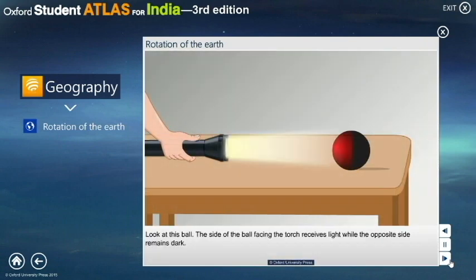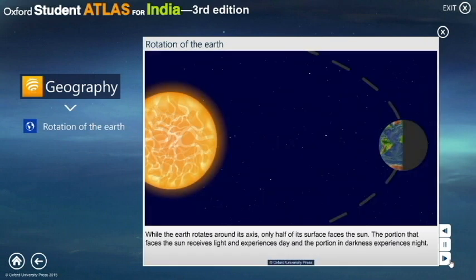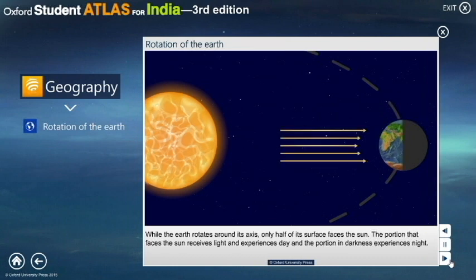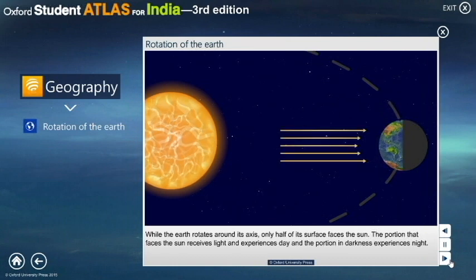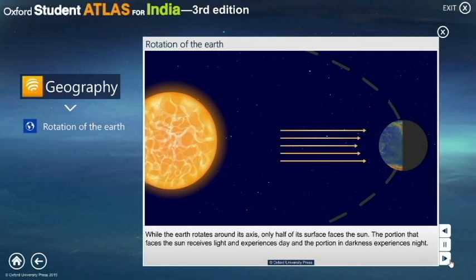Look at this ball. The side of the ball facing the torch receives light, while the opposite side remains dark. While the Earth rotates around its axis, only half of its surface faces the sun. The portion that faces the sun receives light and experiences day, and the portion in darkness experiences night.